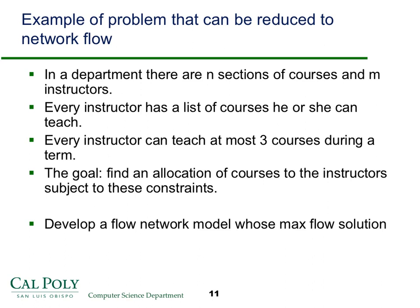So if you'd like some practice here, here's an example of a problem that can be reduced to network flow. Think about it in some department, an academic department, there are maybe N sections of courses that need to be offered in M instructors. And each instructor has a list of courses that he or she can teach. And every instructor can teach at most three courses during a term. And your goal is to find if there's a way to allocate the courses to the instructors subject to those constraints so that all the courses can be covered by the instructors. So try to develop a network, a flow network model whose maximum flow solution solves this problem.